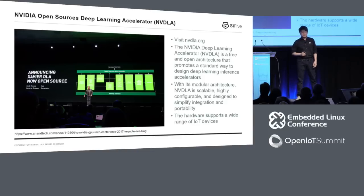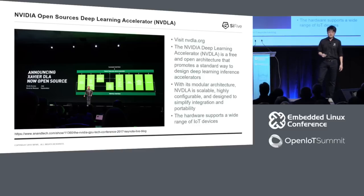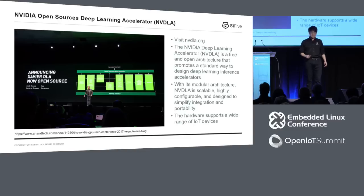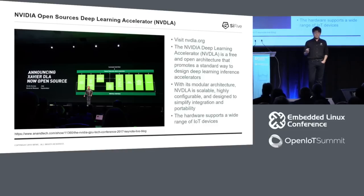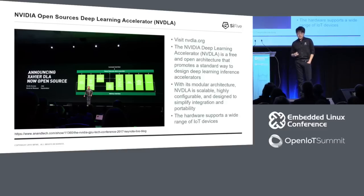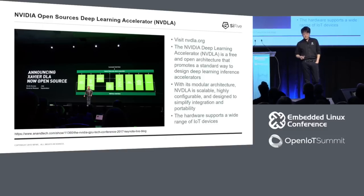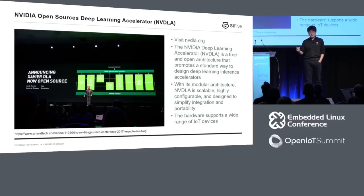A quick note on NVIDIA's effort to open-source their machine learning inference engine. You can see Jensen Huang, CEO of NVIDIA, on stage at last year's GTC proudly announcing the Xavier DLA, which is going to be open source. This DLA engine has actually been taped out in one of the Tegra chips that NVIDIA built. DLA is a deep learning inference accelerator for IoT markets — it's scalable, highly configurable, and supports a wide range of IoT devices. Kudos to NVIDIA, and I would love to see more companies joining the open-source hardware revolution.